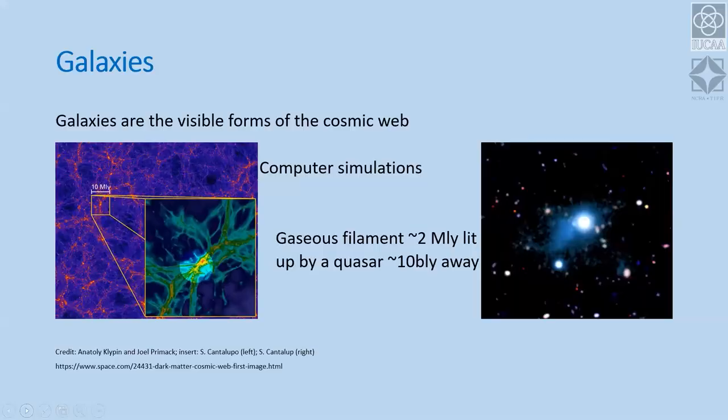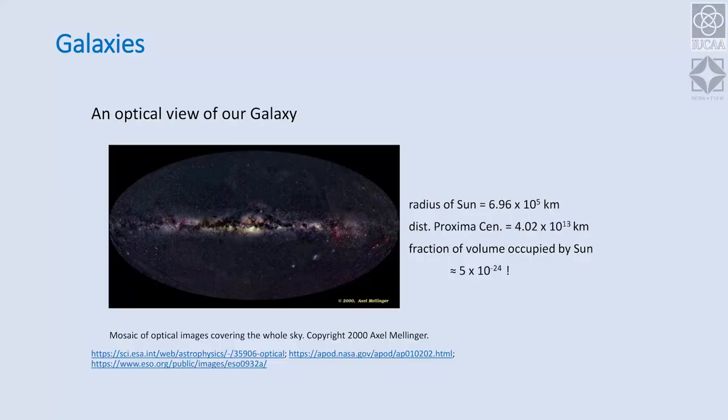If you think for a moment about the size of our Sun, which is about 6,000 kilometers or so in radius, and the distance to the nearest star, Proxima Centauri, which is part of the Alpha Centauri system — you can calculate the volume occupied by the Sun and the volume to the nearest star, take a ratio, and find that only a small fraction, less than about one part in 10 to the power of 20, is occupied by the stars.